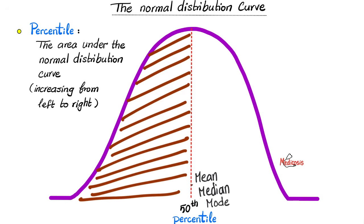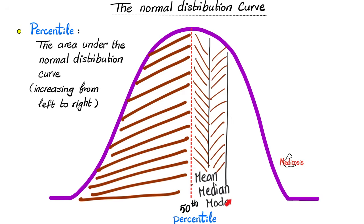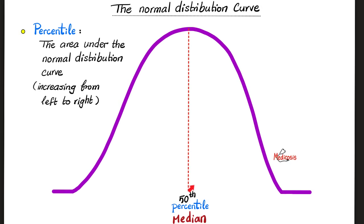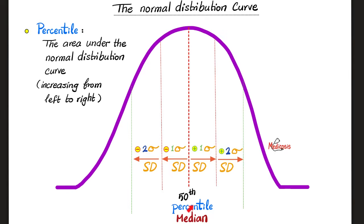What if I go above it? Then you go 60th, 70th, 80th, 90th, and then 100th. As you go from the left to the right, the area under the normal distribution curve increases. That's why the percentile increases from left to right. Please remember that the 50th percentile always equals the median. But if this is a normal distribution curve, then the 50th percentile equals the mode and the mean as well as the median.